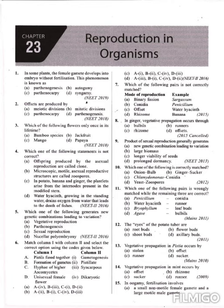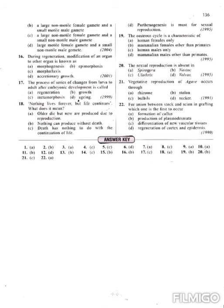Question 15: in oogamy, fertilization involves a large non-motile female gamete and a small motile male gamete. The correct answer is option B. Oogamy takes place in humans.